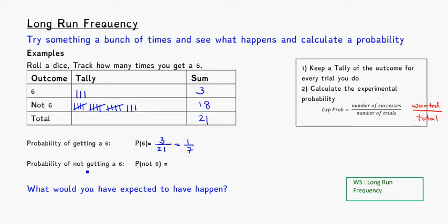The alternative here, the probability of not getting a six, where P(not 6) means probability of not six, similar to P(6) means probability of getting a six. The number of times I did not get a six was eighteen out of twenty-one. That should simplify to six over seven. A couple of things you might notice is that one-seventh and six-sevenths should add up to one. The total possibility should add up to one. If I add those two together, I should get one.